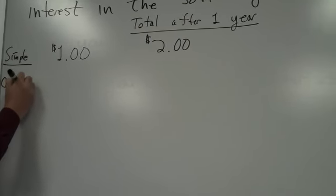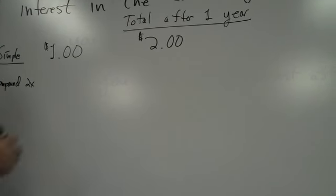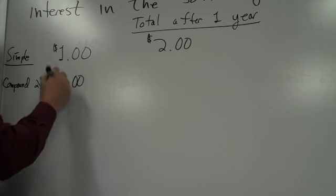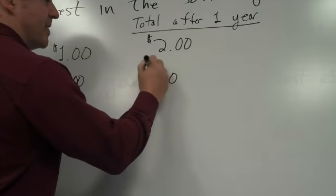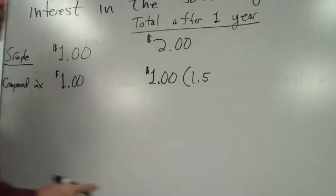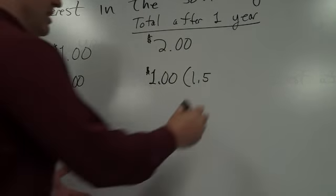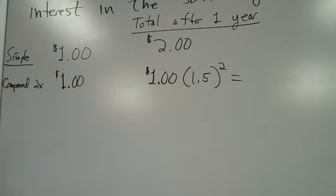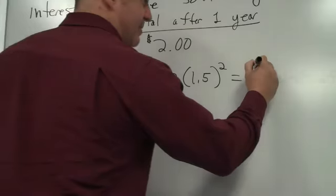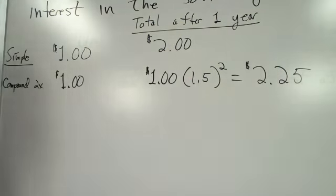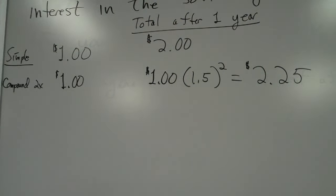Now, compound it two times a year. You start with your dollar. Because compounding it every six months means you get 50% interest twice. So you take your dollar and you multiply it times 1.5. 1.5 will make something 50% bigger. And you multiply it by that twice. And what do you get when you multiply a dollar times 1.5 twice? That's $2.25, right? Because first you'll get 50 cents of interest. Then you'll get 50% of $1.50, which is $0.75 interest.